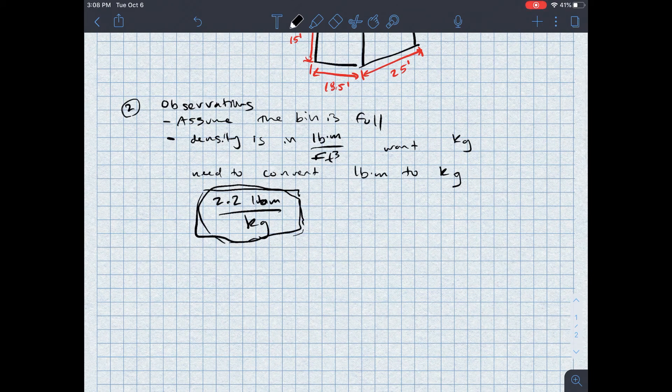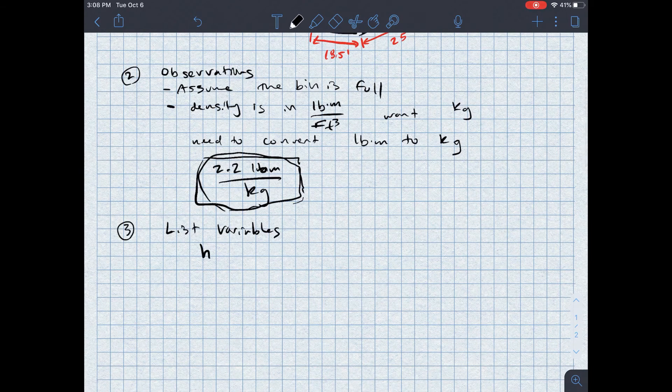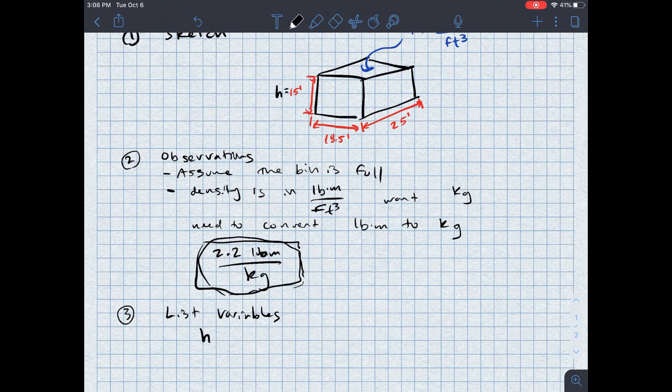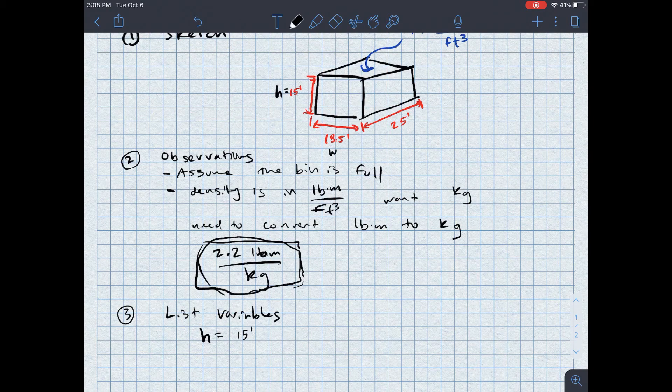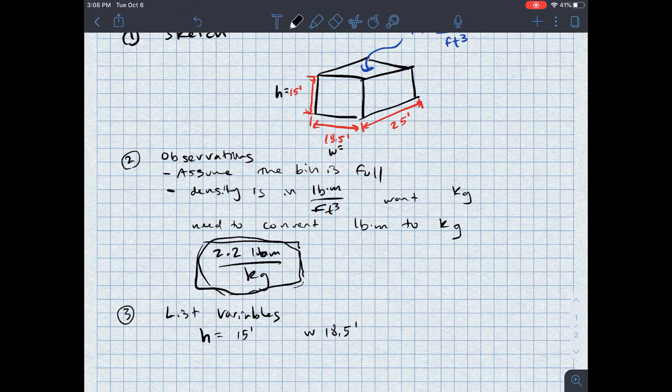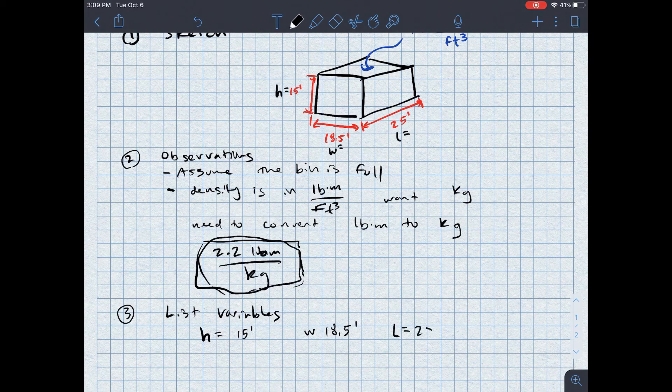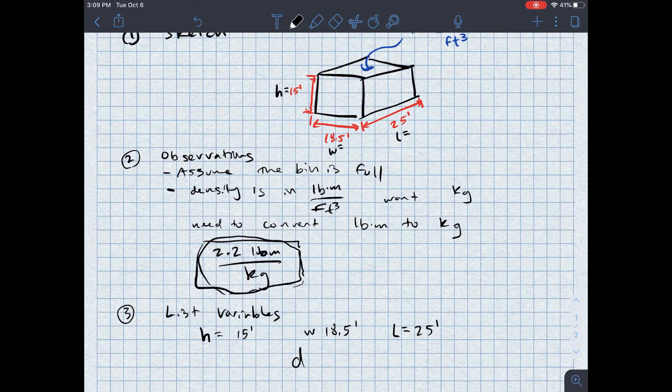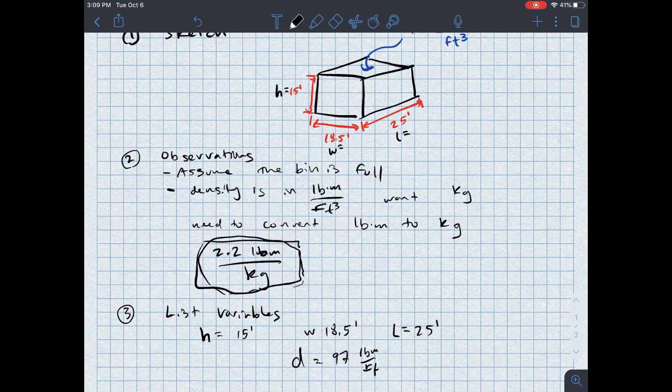All right, the next step is to list variables and constants. So let's call h my height. So we'll say in my drawing up here, h is my height. And it's 15 feet. Let's call my width as 18.5 feet. I'm just using the single tick mark to represent feet. And let's call this my length. All right, my length is 25 feet. And then the other part I've given you is density. And that density is 97 pounds mass per feet cubed.